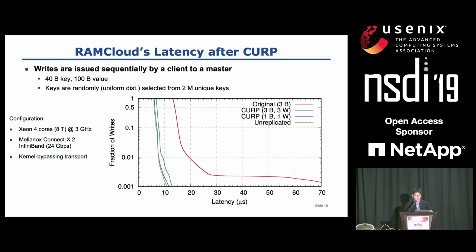This graph shows how CURP improves RAM Cloud's latency. It shows the unloaded latency of write operations with four different settings: original RAM Cloud, RAM Cloud without replication, and two versions of CURP — one with three backups and three witnesses, and one with only one backup and one witness. This is the complementary CDF, and the y-axis is the proportion of data points in log scale. When you look at the median value, CURP almost halved the latency of RAM Cloud write operations. Also, when comparing RAM Cloud's latency without any replication, using CURP with three backups and three witnesses incurred just about one microsecond overhead, which is pretty good.